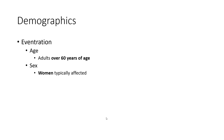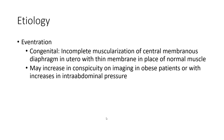Bilateral paralysis usually presents with respiratory failure. Aetiology of eventration: incomplete muscularization of the central membranous diaphragm in utero, with a thin membrane in place of normal muscle. It may increase in conspicuity on imaging in obese patients or with increased intra-abdominal pressure.